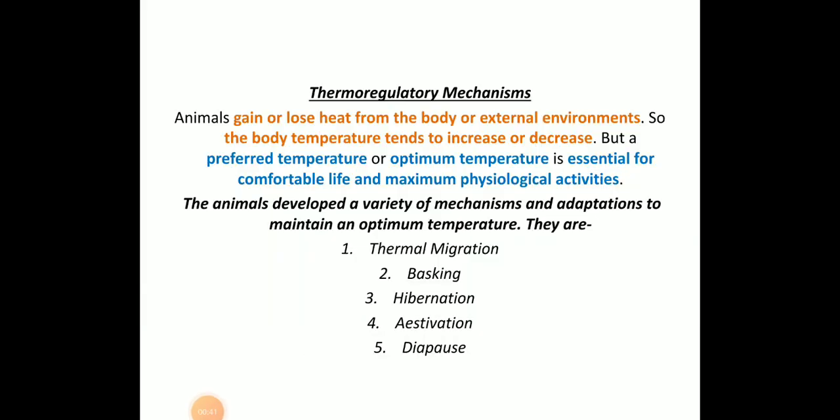Thermoregulatory mechanisms. Animals gain or lose heat from the body or the external environment, so the body temperature tends to increase or decrease. The preferred or optimum temperature is very much essential for comfortable life and maximum physiological activities. To overcome this, organisms undergo certain mechanisms called thermoregulatory mechanisms. Examples include thermal migration,